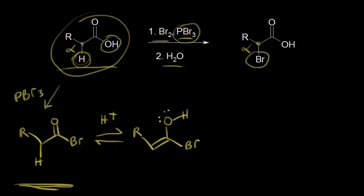We've talked about acid-catalyzed tautomerization in an earlier video. To simplify: you have a double bond between this carbon and the oxygen, and you can move that double bond between the two carbons. You also move a proton — converting the keto form of our acyl bromide into an acyl bromide enol. Once we form our enol, we can think about the bromine, since we have Br2 present as well.